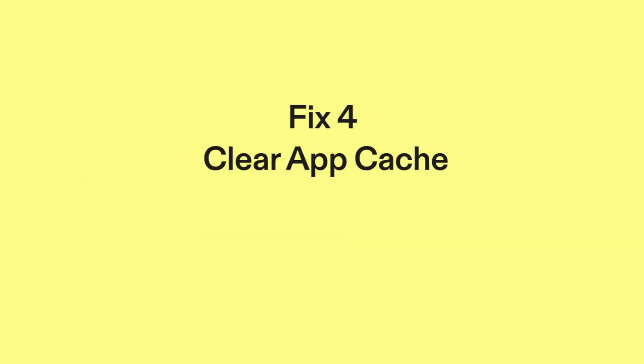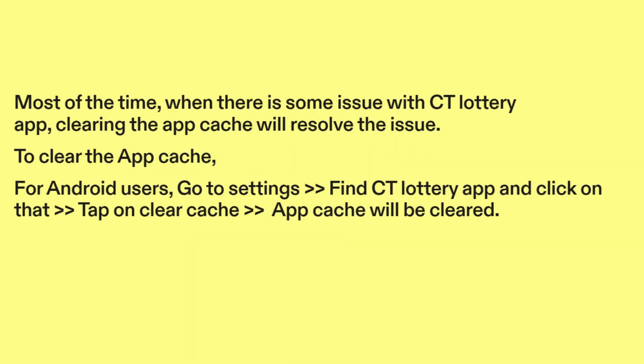Fix 4: Clear App Cache. Most of the time, when there is some issue with the CT Lottery app, clearing the app cache will resolve the issue. To clear the app cache for Android users, go to Settings, find the CT Lottery app and click on it, then tap on Clear Cache. The app cache will be cleared.